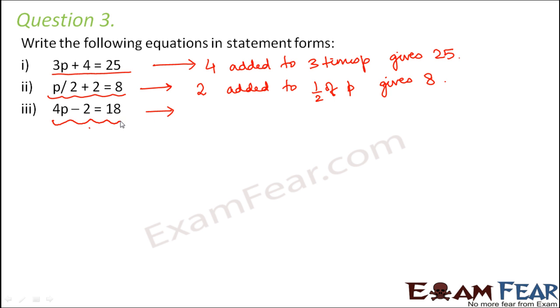In the third one, what are we doing? Are we adding something? No, we are subtracting something. That means 2 subtracted from 4 times p, or we can say 2 taken away from 4 times p. So 2 subtracted from 4 times p gives 18. So these are pretty simple. You just need to understand what a specific linear equation means.